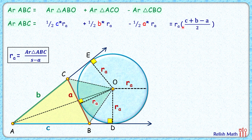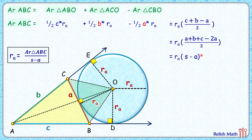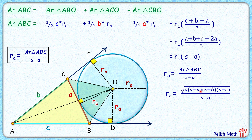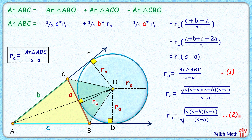Taking ra as common, we are left with (c + b − a)/2. Adding and subtracting a, we get: (a + b + c)/2 is your semi-perimeter s, and 2a/2 is a. So we can say ra = Area / (s − a). For the second form, writing area from Heron's formula as √(s·(s−a)·(s−b)·(s−c)), simplifying gives the excircle radius as ra = √(s·(s−b)·(s−c) / (s−a)). So we have two forms which we'll use to derive further formulas.